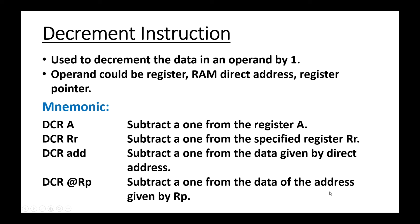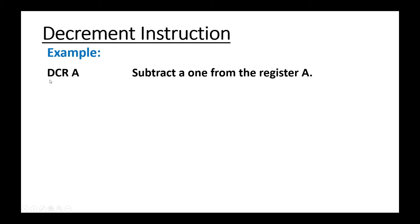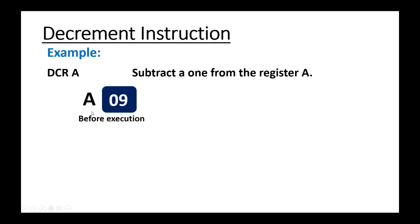DCR A subtracts one from the content of the accumulator and the result is stored in the accumulator itself — in the same operand the result is stored. Initially A is having 09, and after execution of this instruction A would be 08.